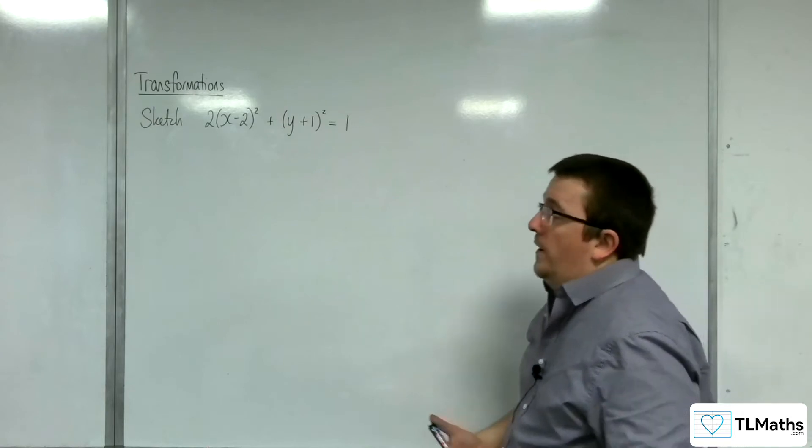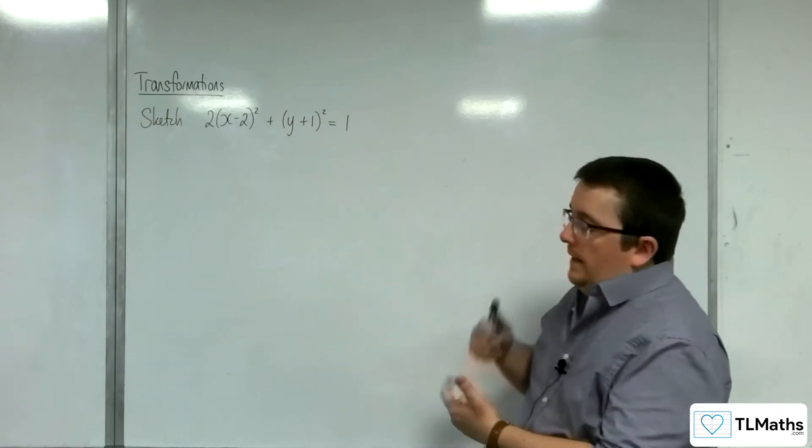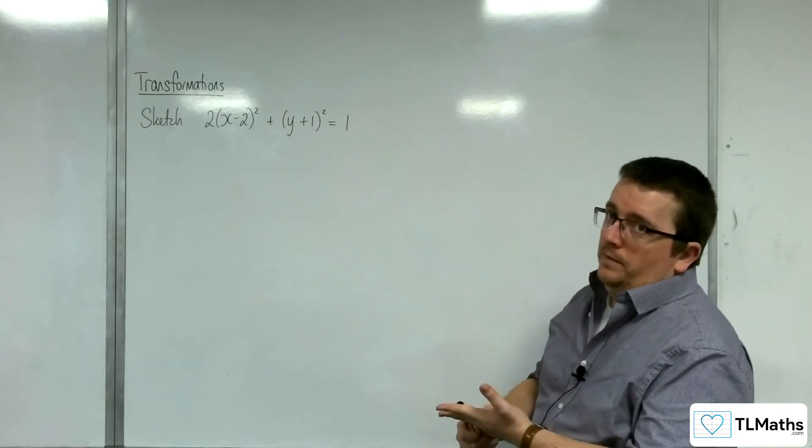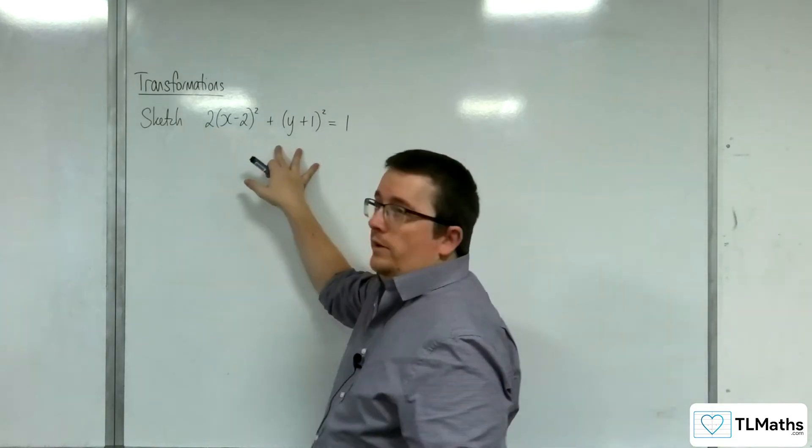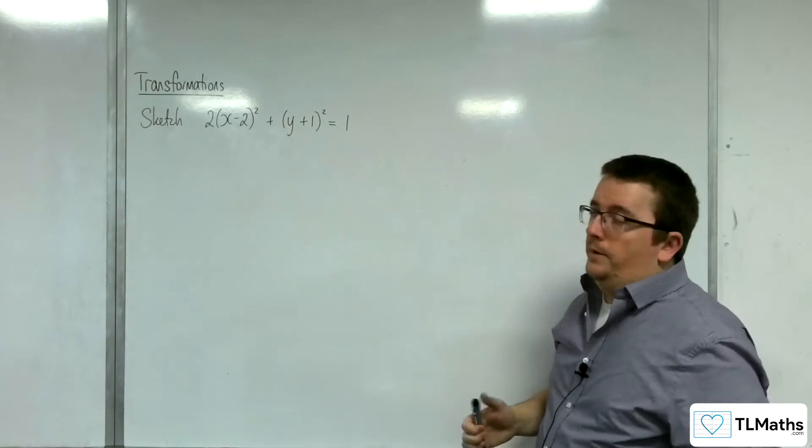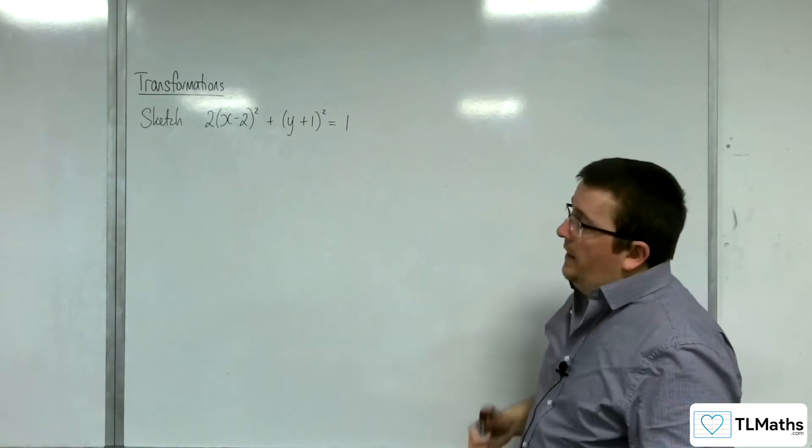The first thing to identify is whether it's a parabola, an ellipse, or a hyperbola. Of those three, it's got to be the ellipse because we have x squared and y squared. So it's definitely an ellipse.